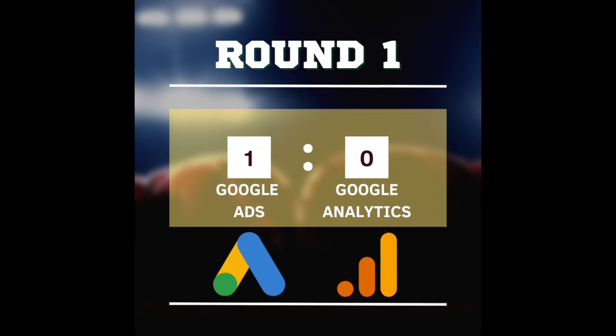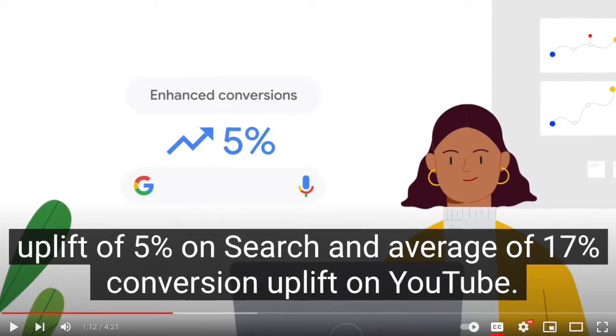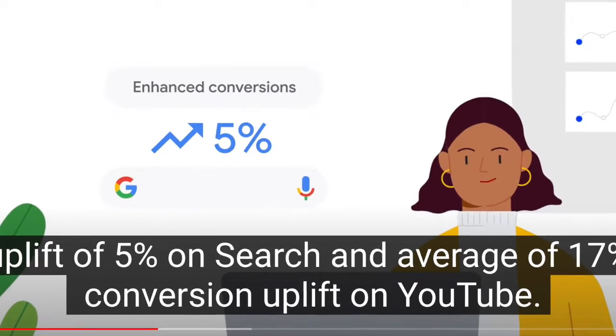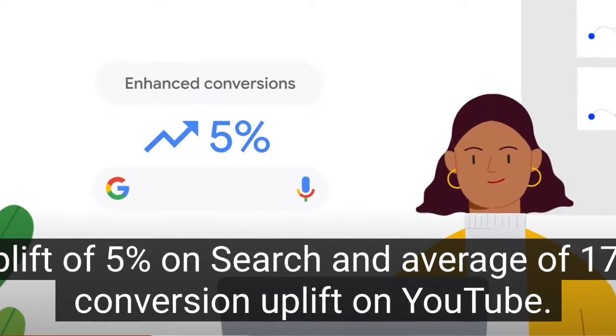For that reason, the point goes to the Google Ads tag. The second criteria to consider is enhanced conversions. According to Google, enhanced conversions can help you track up to 5% more conversions happening on your website.